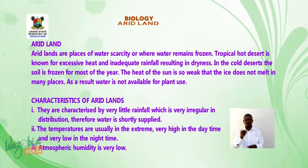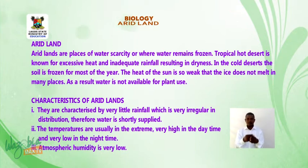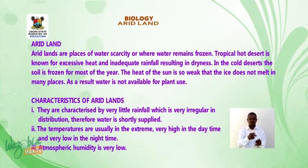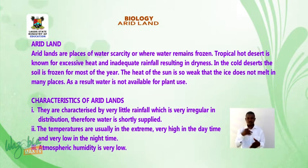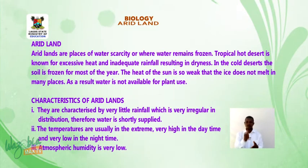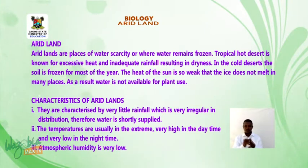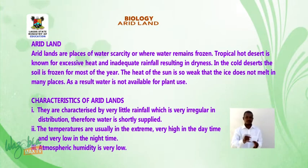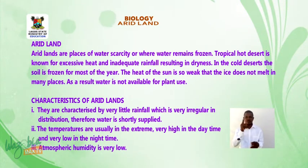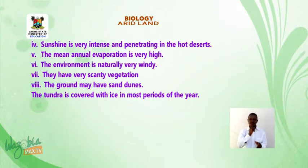Characteristics of arid lands: One, they are characterized by very little rainfall which is very irregular in distribution; therefore water is in short supply because the rainfall in that environment is not much. Two, the temperatures are usually in the extreme — very high in the daytime and very low in the nighttime.